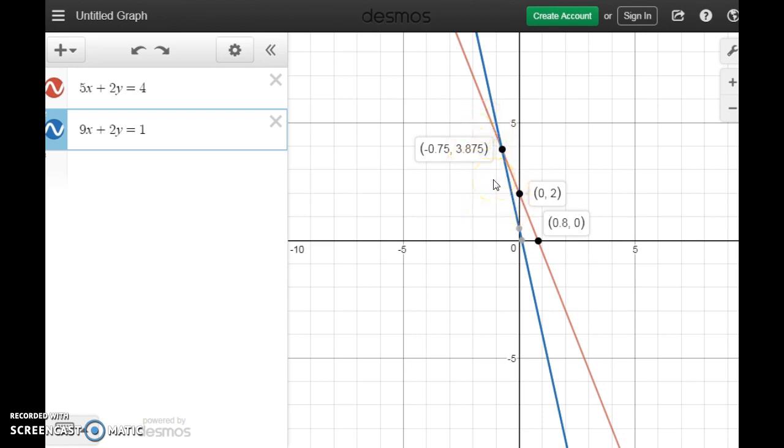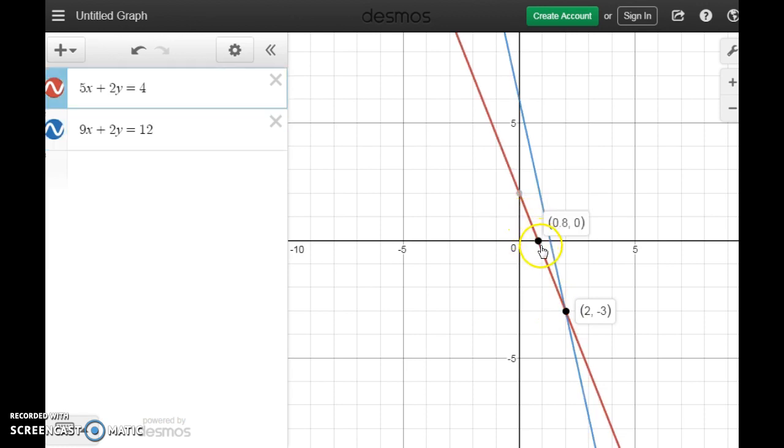Okay, so again, I can pick a point here, I can slide it around until I find something that looks great. There's a point at 4, negative 8.